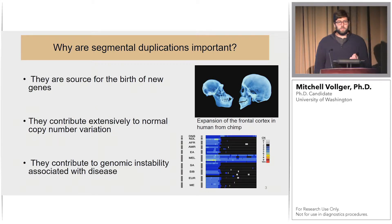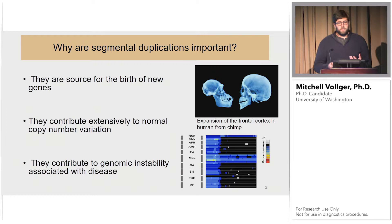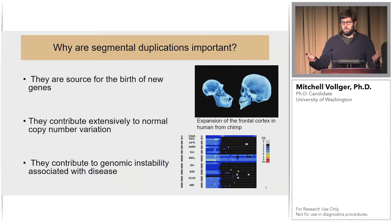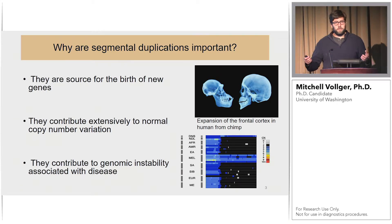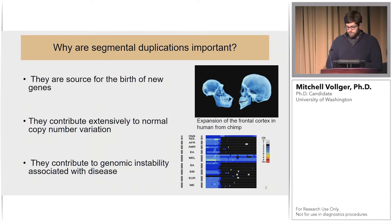Finally, segmental duplications contribute to genomic instability and therefore cause disease. One very common example is VCF syndrome, which occurs in one in every 4,000 births. It's a segmental duplication-mediated disease on chromosome 22 involving a 3 megabase deletion that causes neurological and developmental issues.